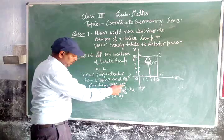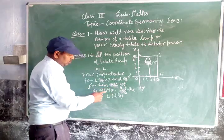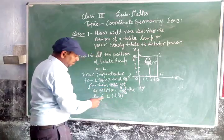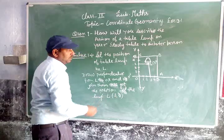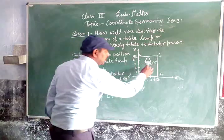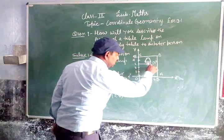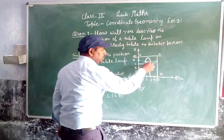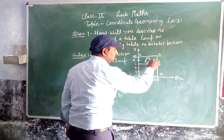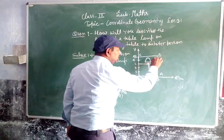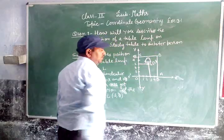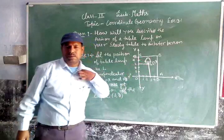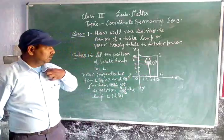We get the position of the lamp as (3, 3). So the coordinates three, three — (3, 3) is the position of the lamp.